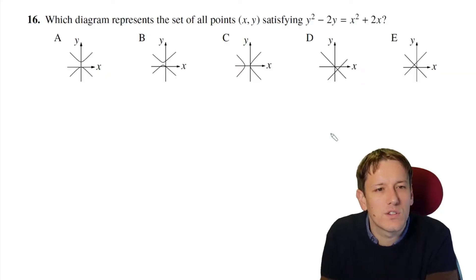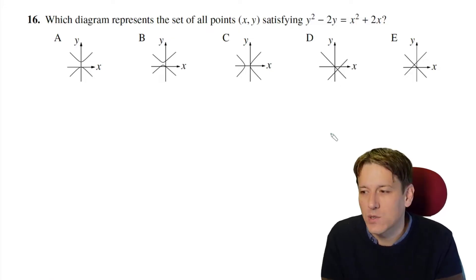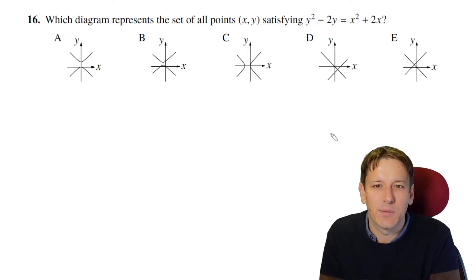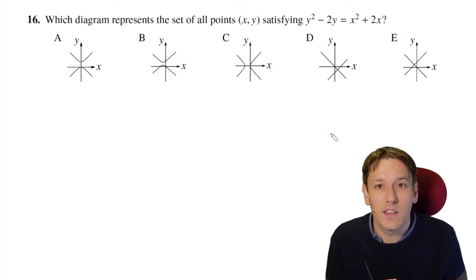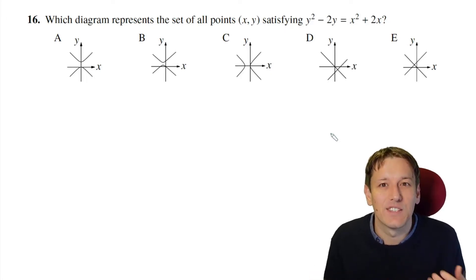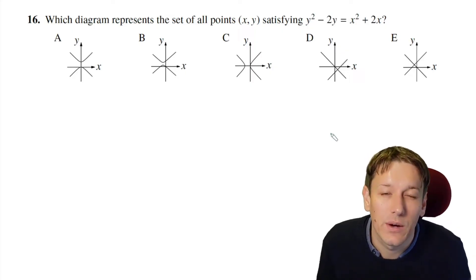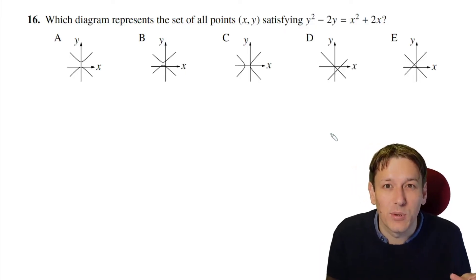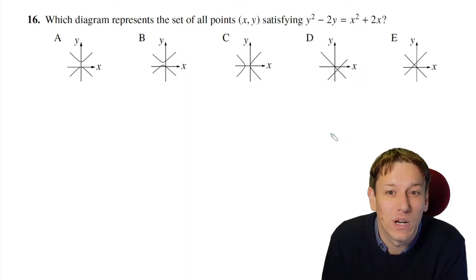So we want to know which of these diagrams represents the set of all the points satisfying y squared minus 2y equals x squared plus 2x — the locus of the points. On each diagram, if the coordinates of a point satisfy the algebraic relation, then that's a point on the diagram, and if not, it's not. One way with a multiple choice question like this — and this comes up on Oxford Maths Admissions Test questions as well — is to find some points that must lie on the diagram and then rule out some of the options.